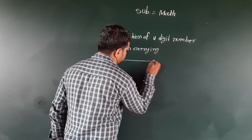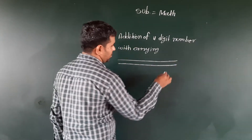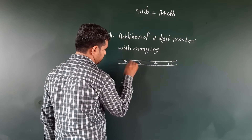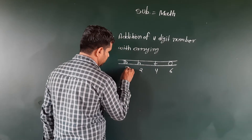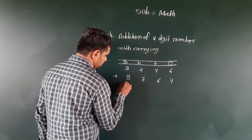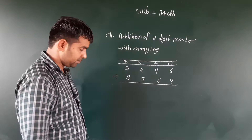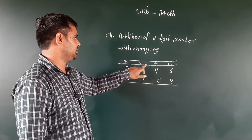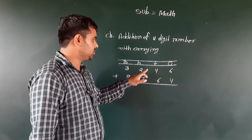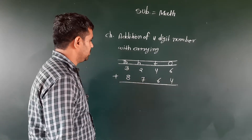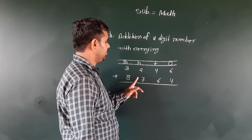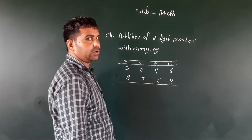Next question. Two sleeping lines. Ones, tens, hundreds, thousands. First number: six, four, two, three — three thousand two hundred and forty-six. Plus: ones four, tens six, hundreds seven, hundreds eight — eight thousand seven hundred and sixty-four. How much is three thousand two hundred and forty-six plus eight thousand seven hundred and sixty-four?